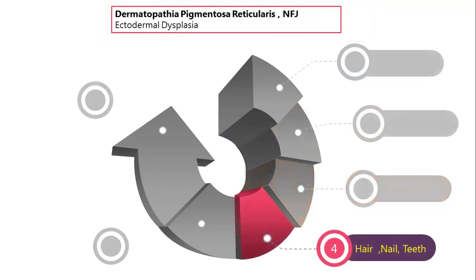Then of course we have hair, nails, and teeth. Very interestingly, some of these disorders affect these three structures, which makes it very simple to diagnose them. A classic example is dermatopathia pigmentosa reticularis and a host of other overlap conditions with overlap with ectodermal dysplasia.